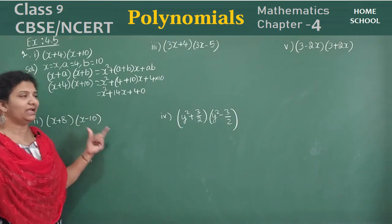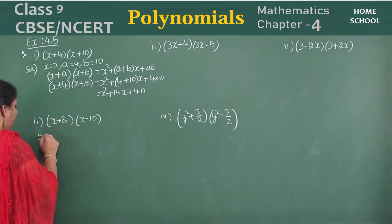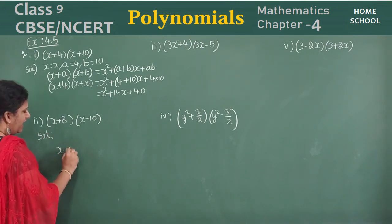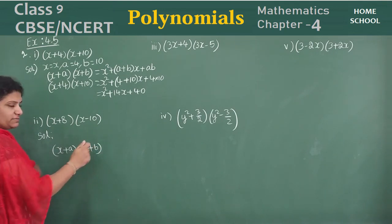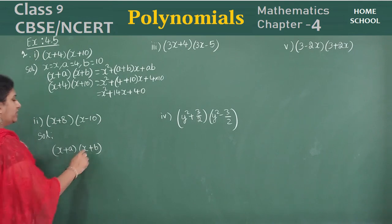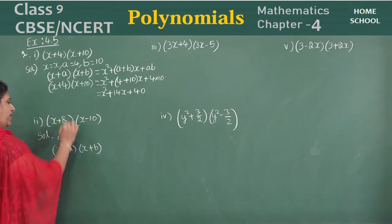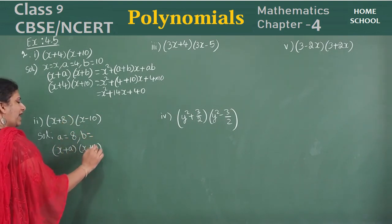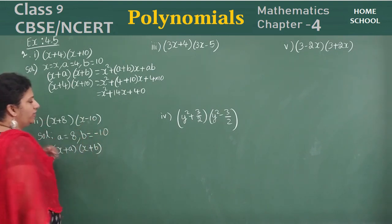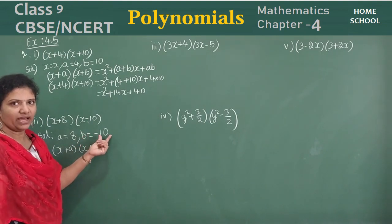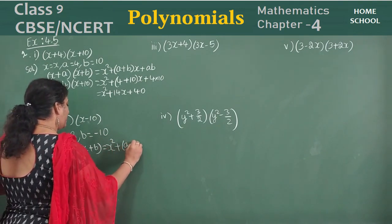All these problems use this same identity. Look here — it will be in the form x plus a into x plus b. Don't write x minus b; you don't have any identity like that. So your x value is x. On comparing, a value is 8, and for b, you take the negative sign also — b value is minus 10.